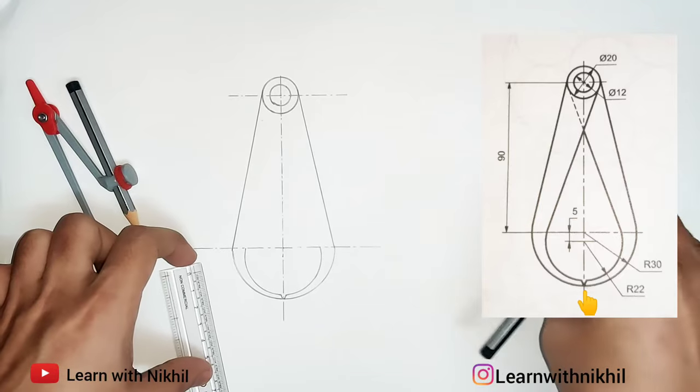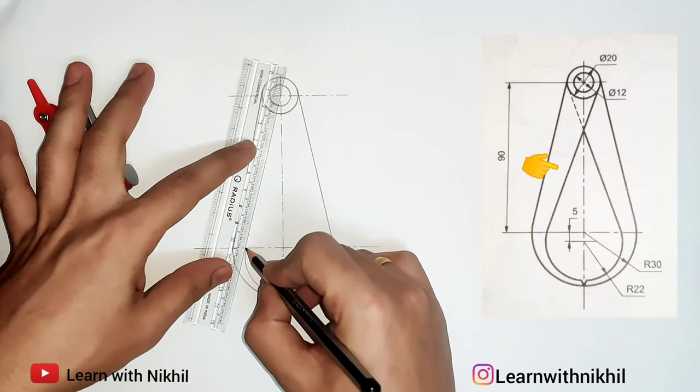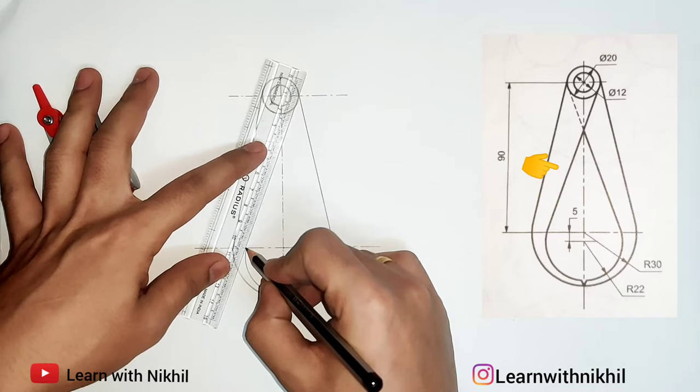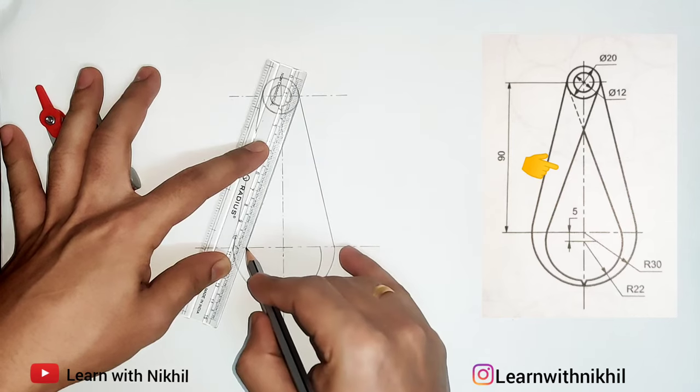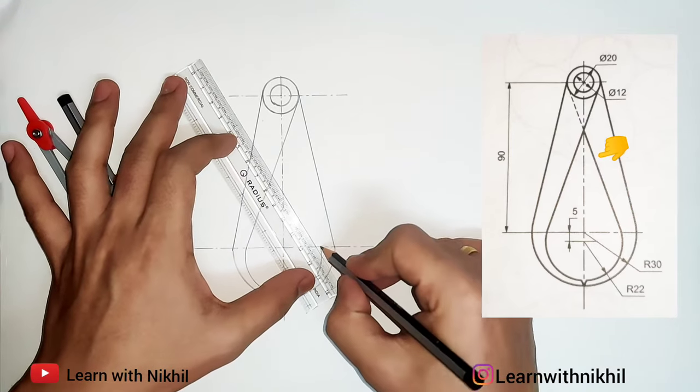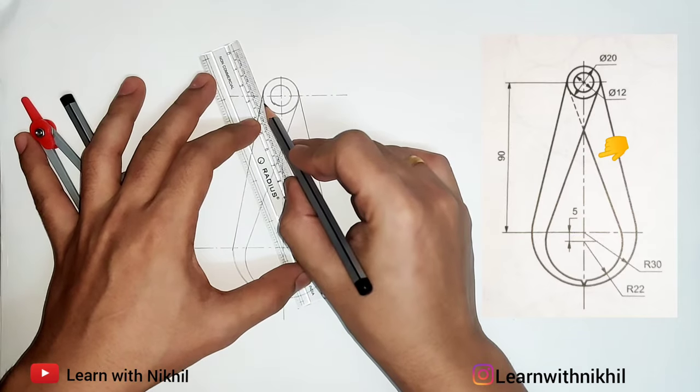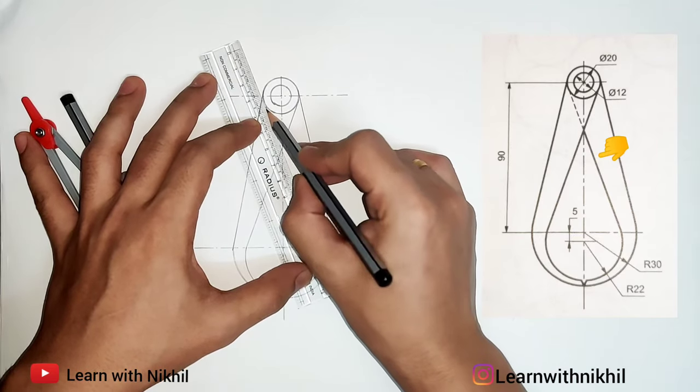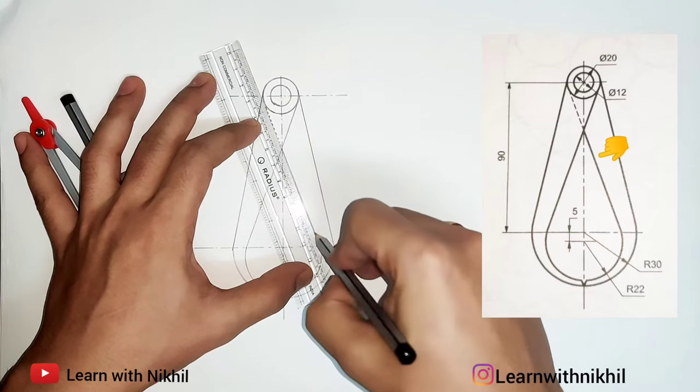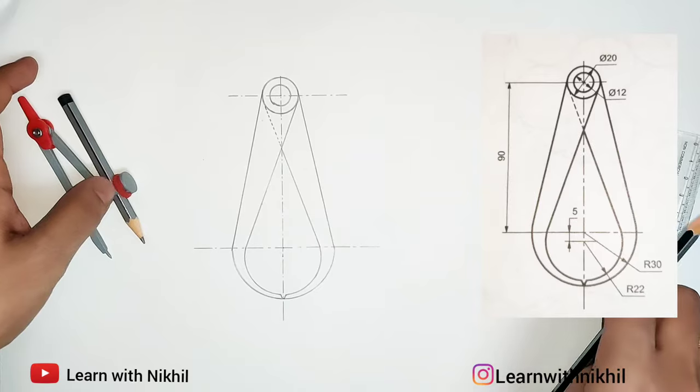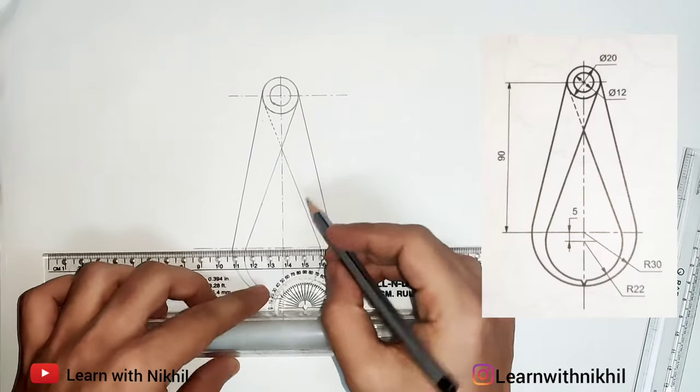Now as we did earlier, same we'll align the scale to the outer circle like a tangent and draw the line. Here it will be a dotted line as it is behind—it is hidden. And here it will be a dark line as given in the question.